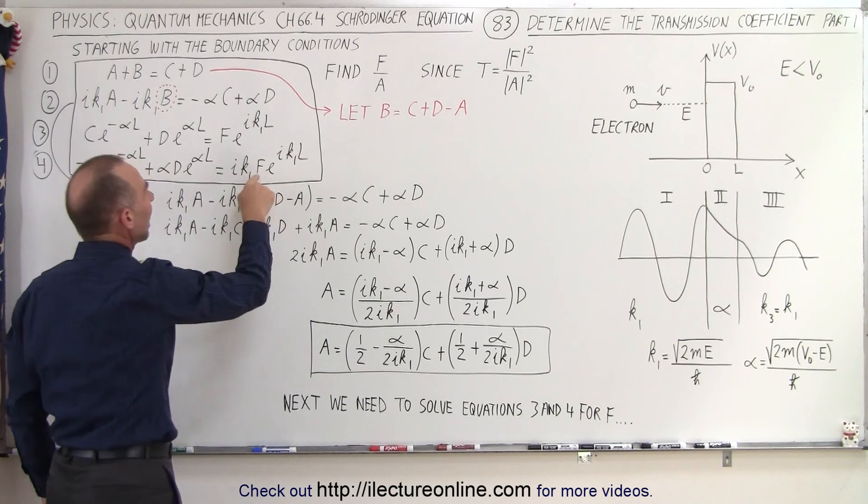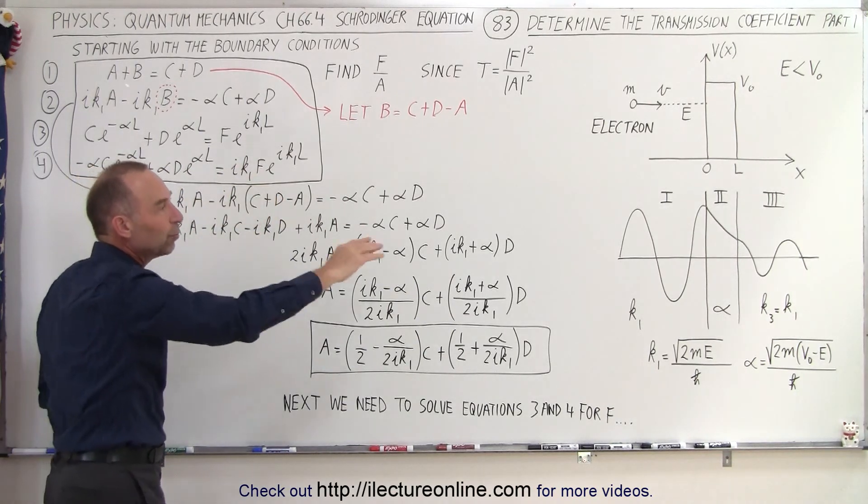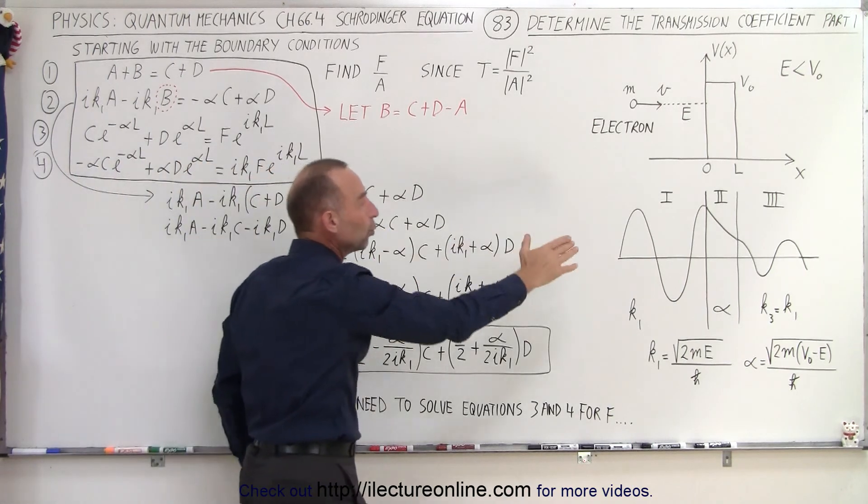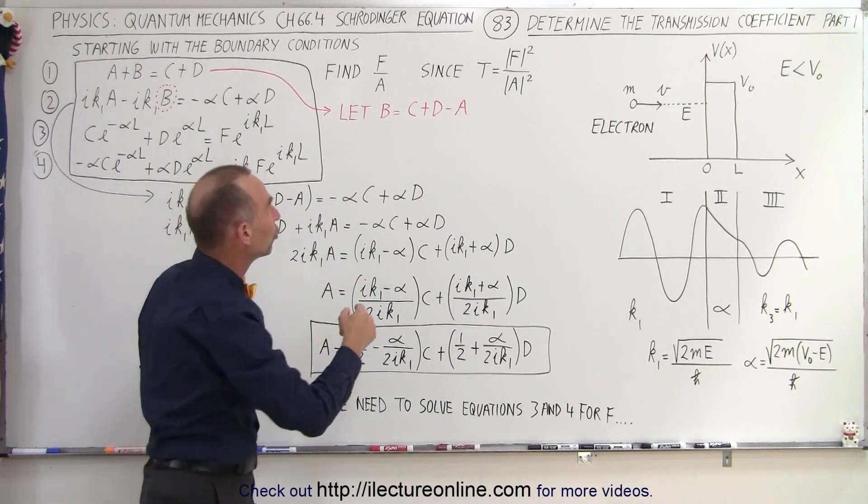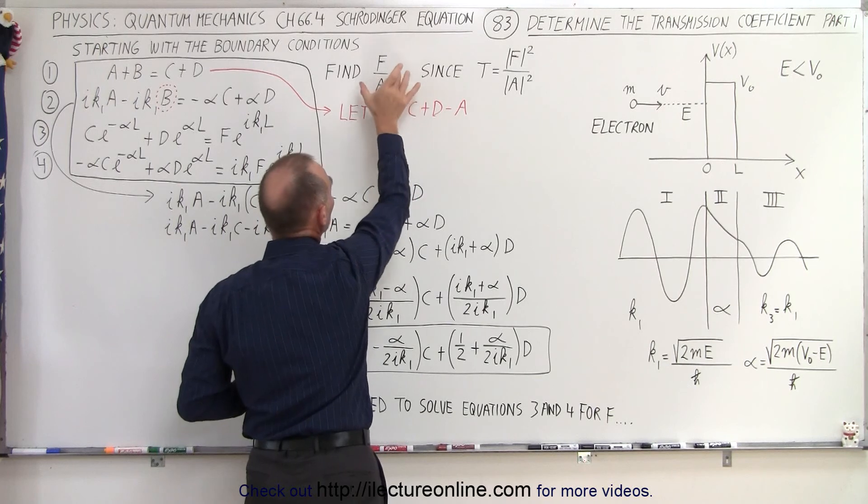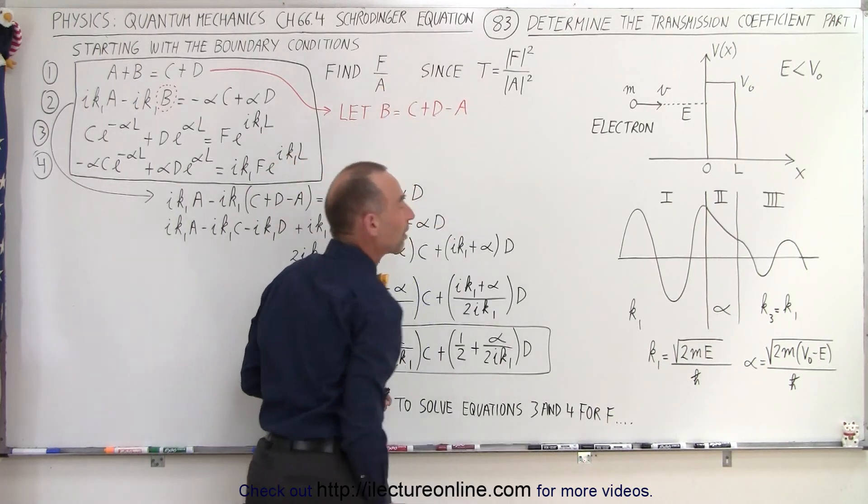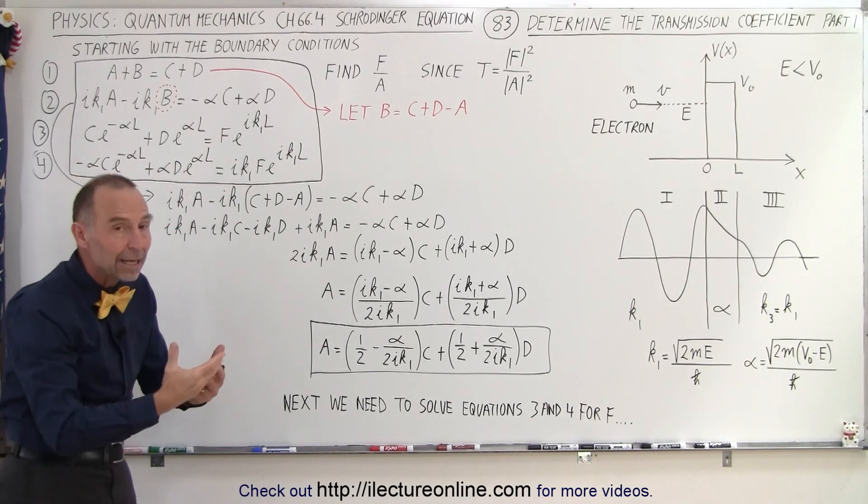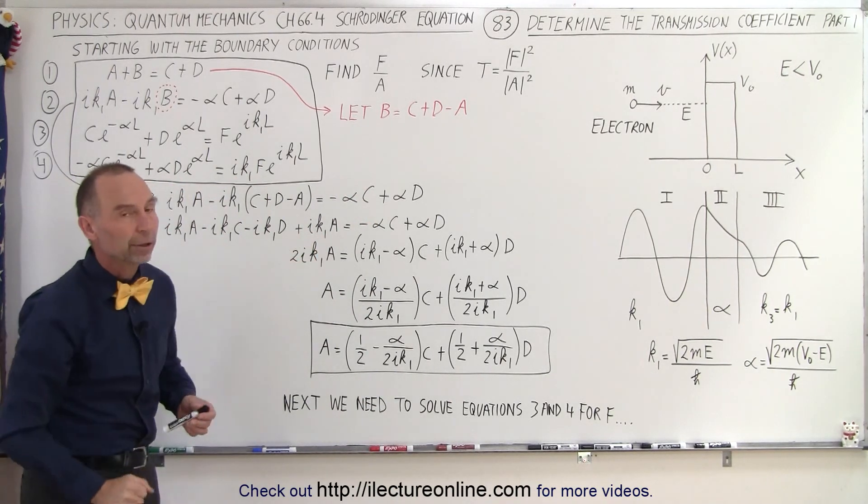Now f is the amplitude of the wave in region 3, and a would be the amplitude of the wave in region 1. So the relationship between those two, if we take f over a and we square that, we get what we call the transmission coefficient, which also can be used to find the probability of the particle making it through the barrier.